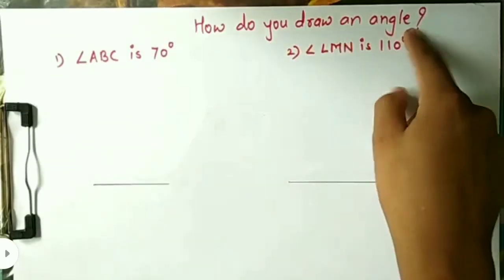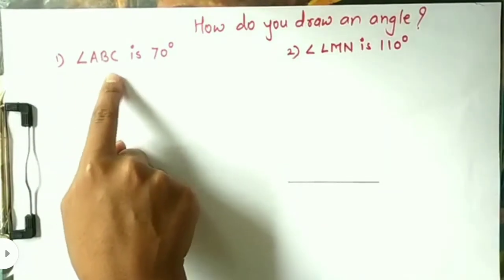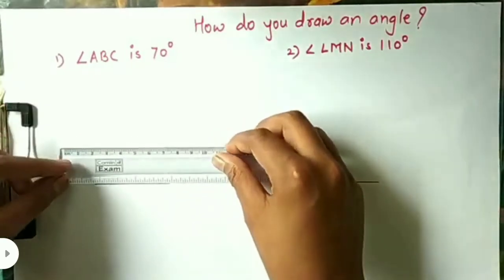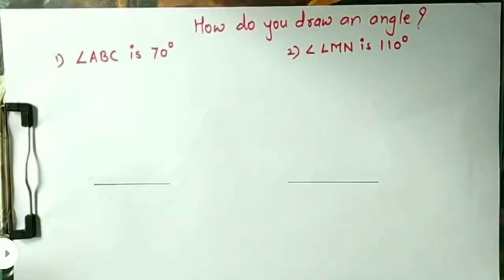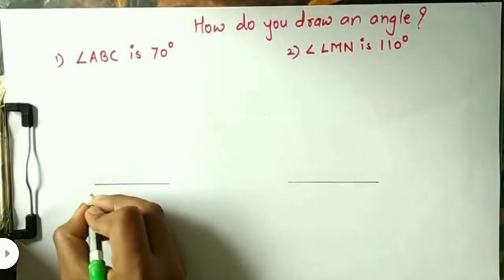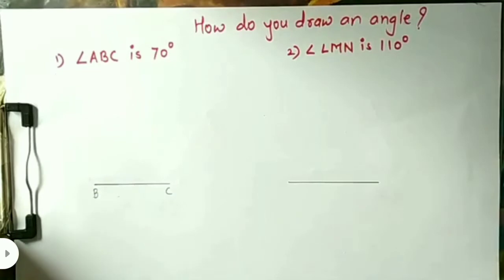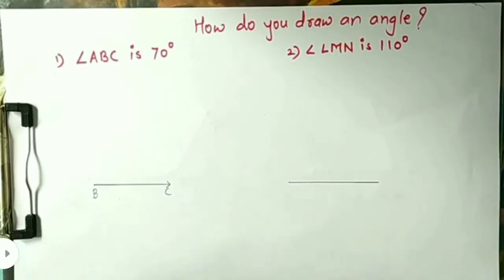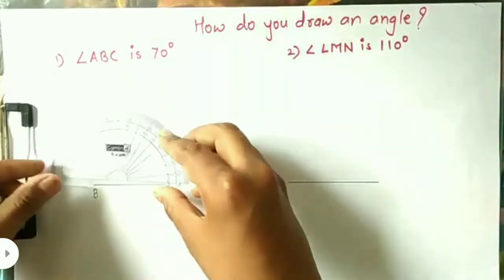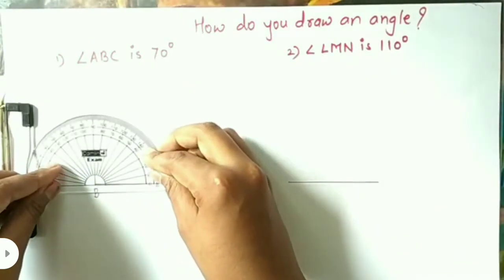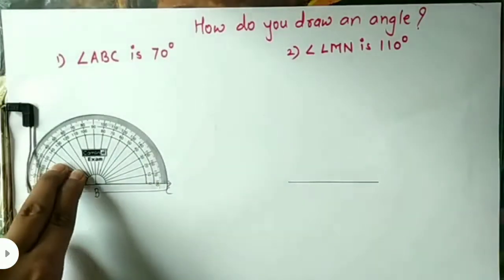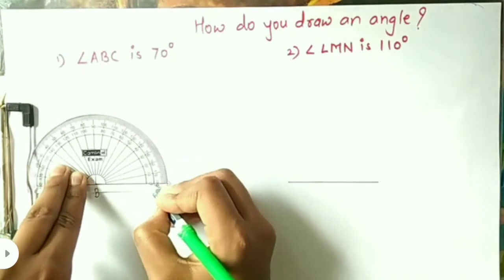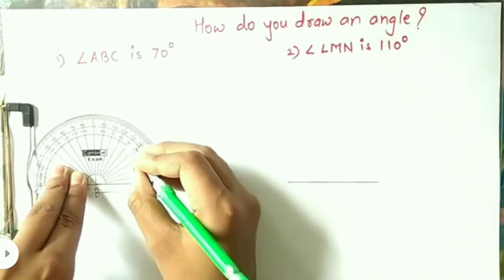Next is how do you draw an angle. The first angle is angle ABC which is 70 degrees. First, draw arm BC with a ruler. Give the name BC. Since B is the vertex, we must draw a 70 degree angle at that point. Put the center of the protractor on B. Count the divisions starting from the 0 near point C. Mark a point with your pencil at the division that shows 70 degrees.